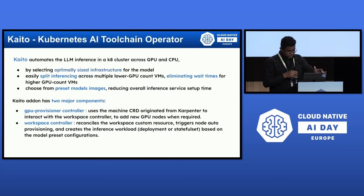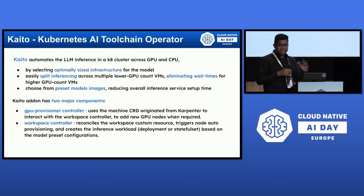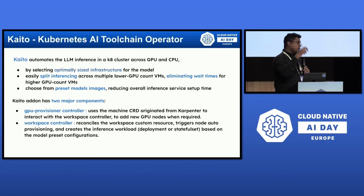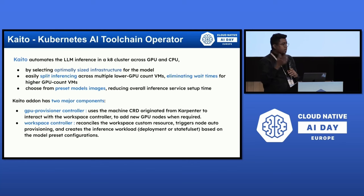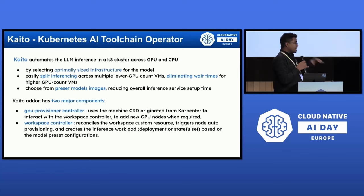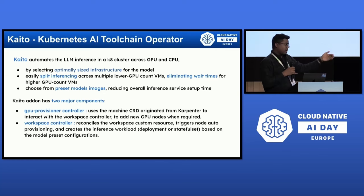Enter KAITO — the Kubernetes AI Toolchain Operator, announced very recently, just three weeks old. It automates LLM inference on Kubernetes across GPUs and CPUs. For a model that doesn't need a lot of compute, it can run on CPU. It can also share the same GPU across multiple models — one large GPU can be shared across multiple smaller models running efficiently on the same platform. It selects optimally sized infrastructure for the model: you just declare what the model needs and it selects the right infra and deploys it.